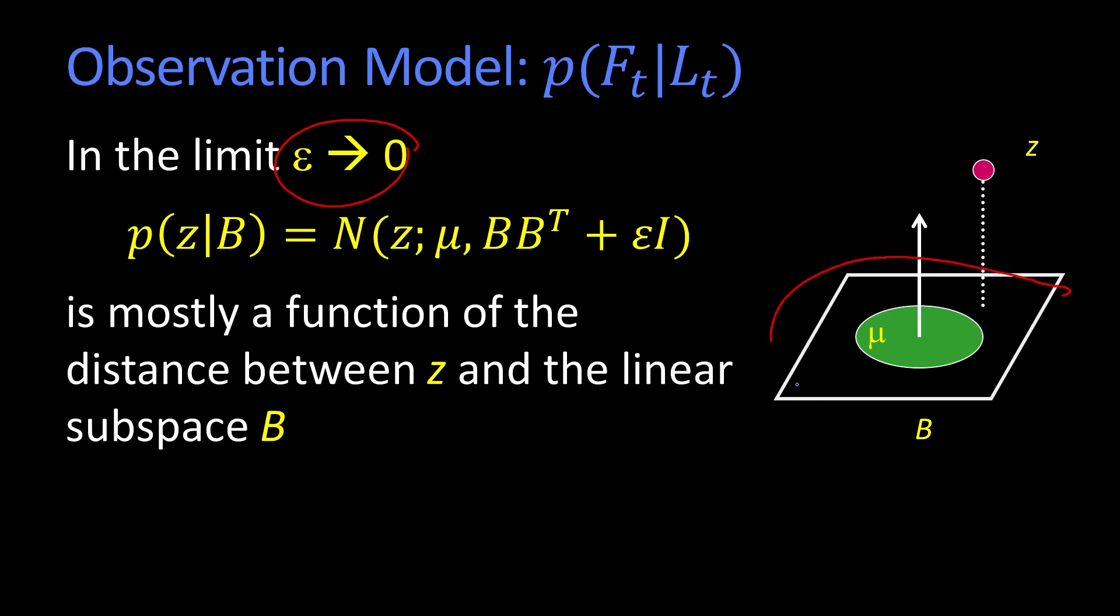you can think of that as this variance becomes bigger and bigger, that the only thing that matters is how far you are out of face space. So it's mostly a function between the point z that you've observed and the face space that's spanned by these vectors.